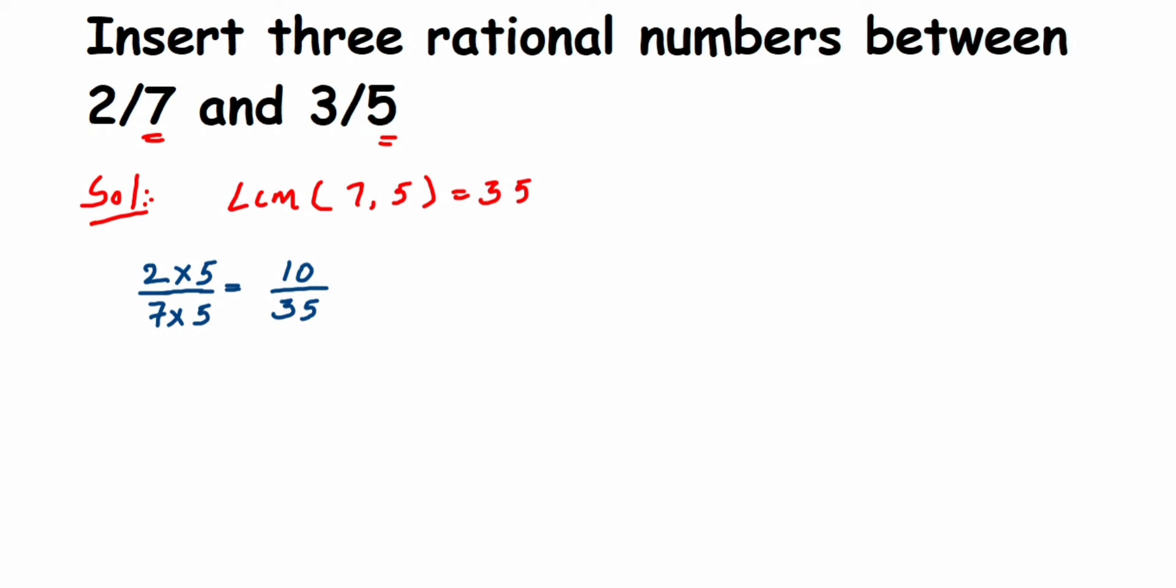The same way I'm going to find it for the second number which is 3/5. Since I want 35 in the denominator, I have to multiply by 7 in both the denominator and numerator. We'll get 3×7 which is 21, so 21/35.